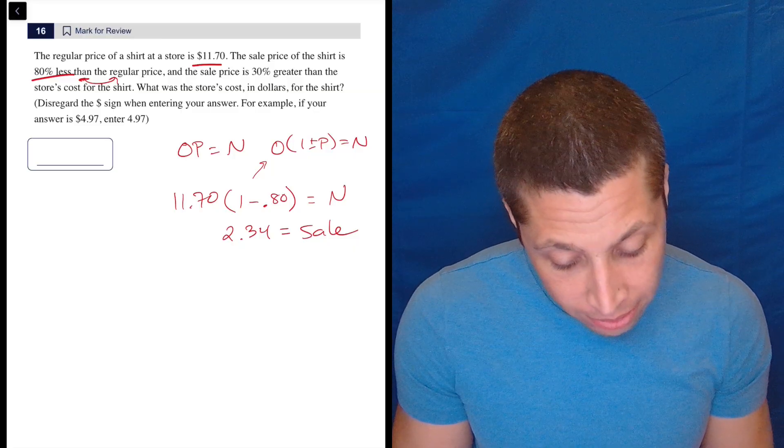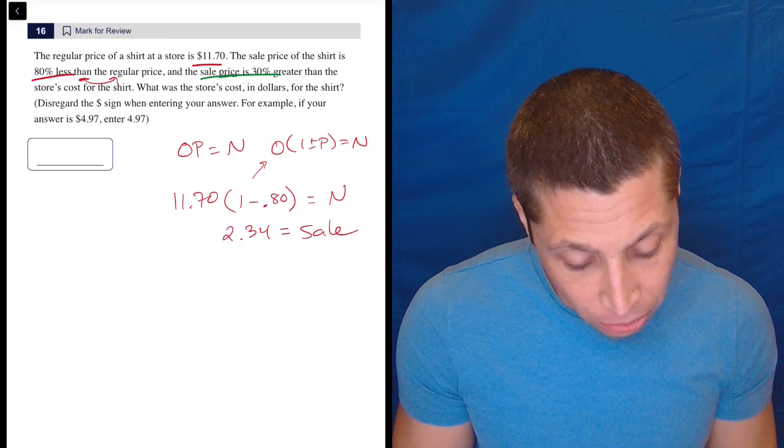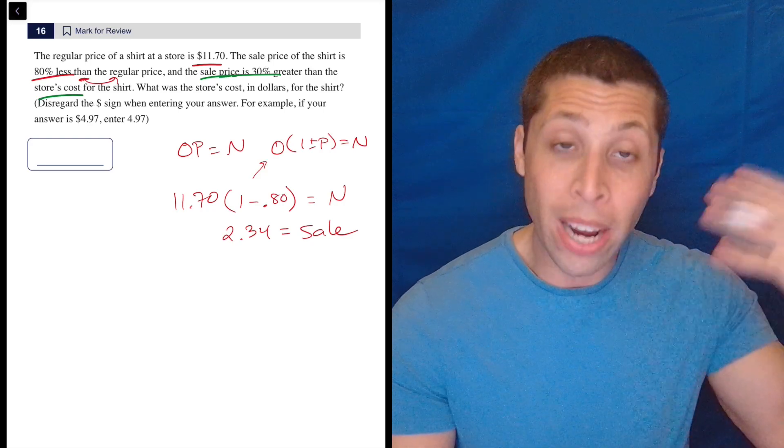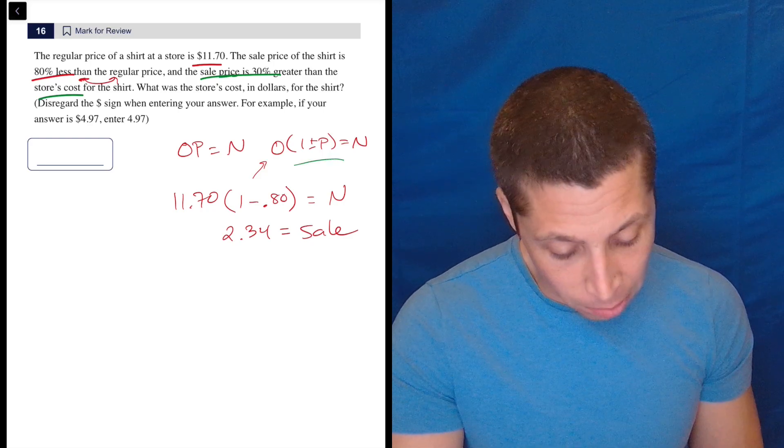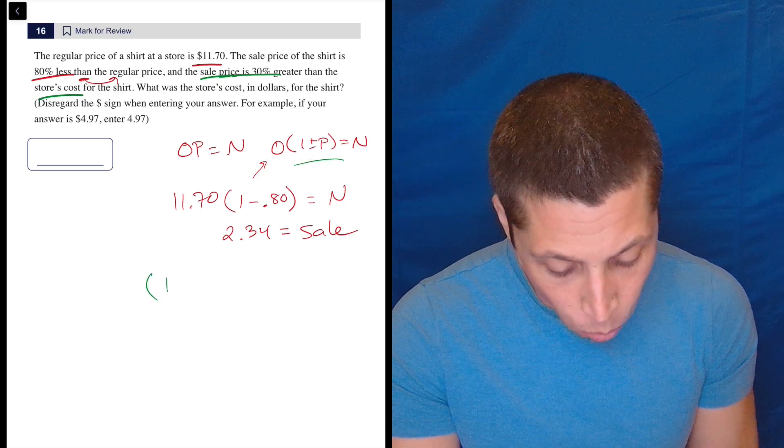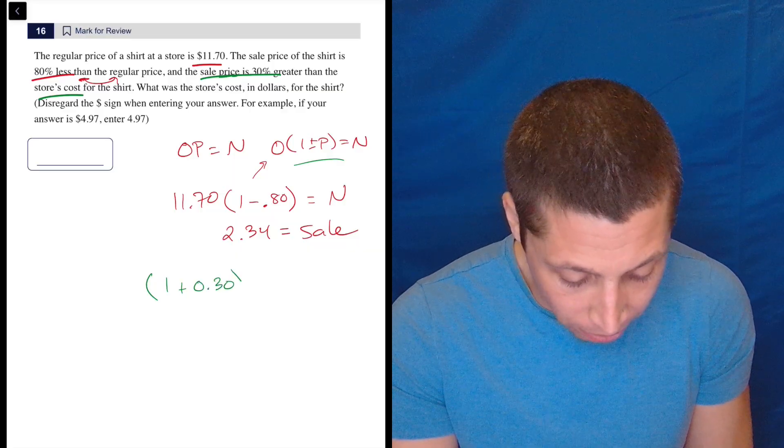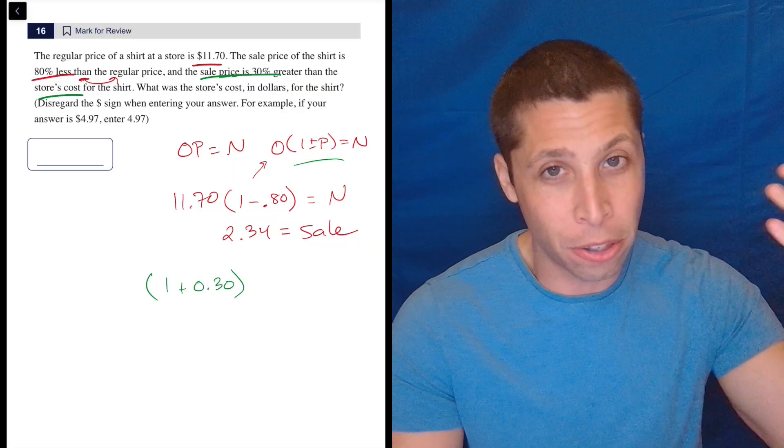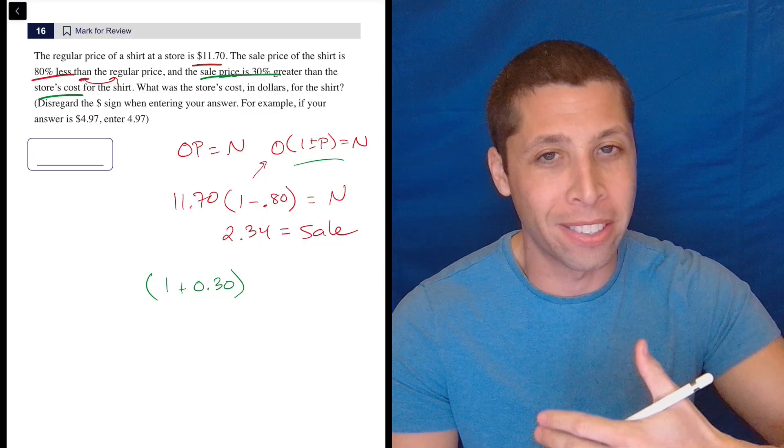Now they say the sale price is 30% greater than the store's cost. So here's another thing we can do. So greater than still the one plus or minus P, but now we need to go one plus 0.30 because we are increasing it. It's 30% greater. This is the best thing about the open formulas is they're very literal.